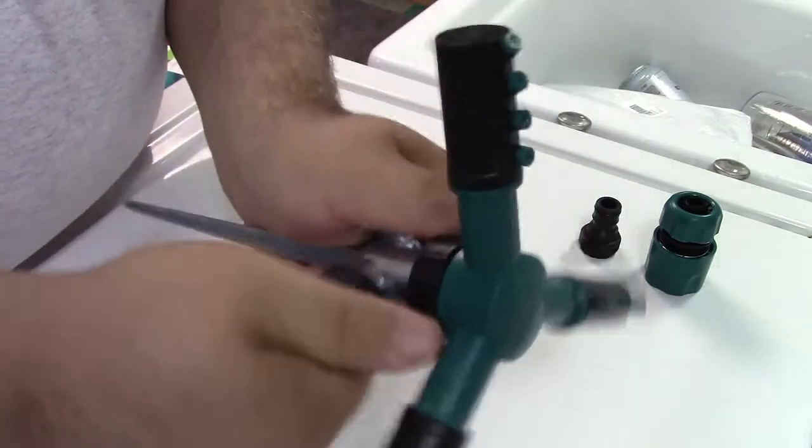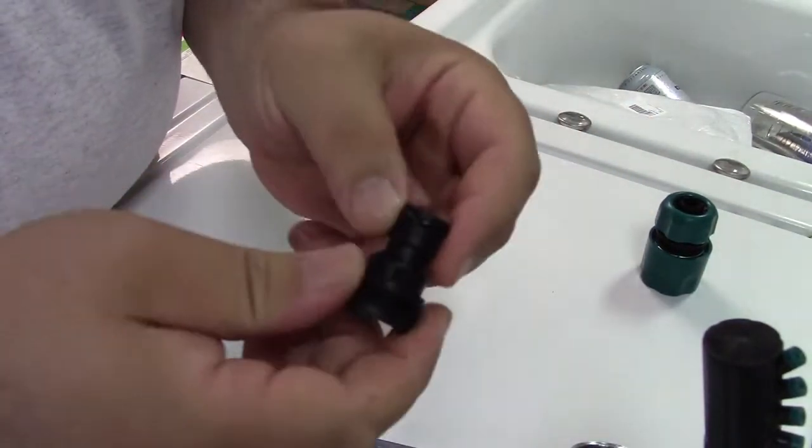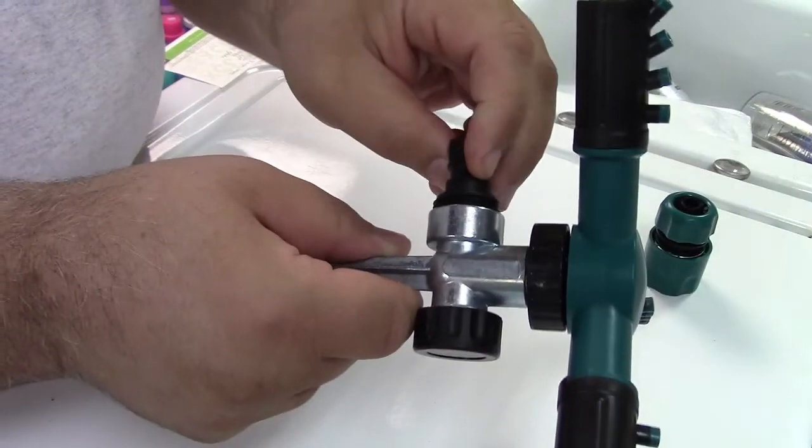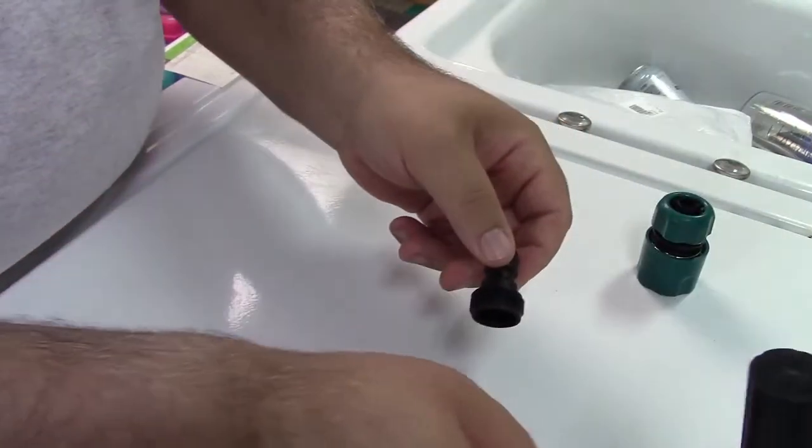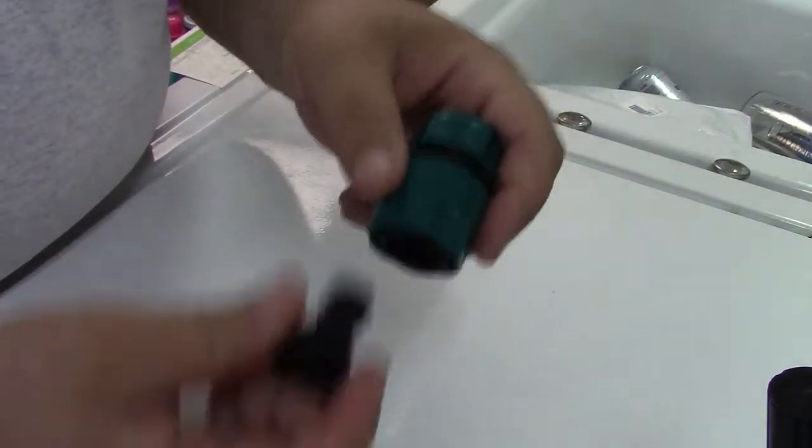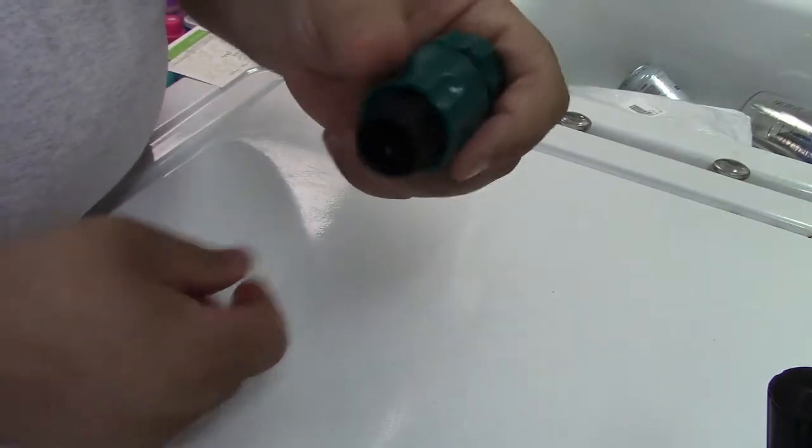Also included is a quick disconnect. So they give you this piece here, it has a rubber o-ring and that can screw in right over here if you like, so if you have a quick disconnect on your hose then you can do that. They also include this which is the coupler for this, you can see how they fit together like that.